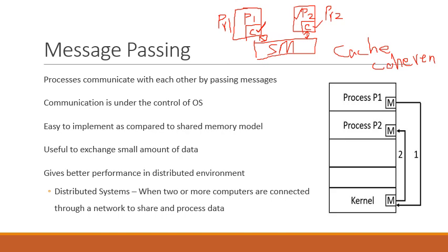This problem usually occurs when the system is a multi-core system or when working in a distributed computing environment, where several machines are connected via a network and every machine or core has its local cache, with copies of shared data placed in every local cache. In the shared memory model, there is a Cache Coherency Problem, and it is challenging to deal with it. In the message passing scheme, there is no such Cache Coherency Problem.